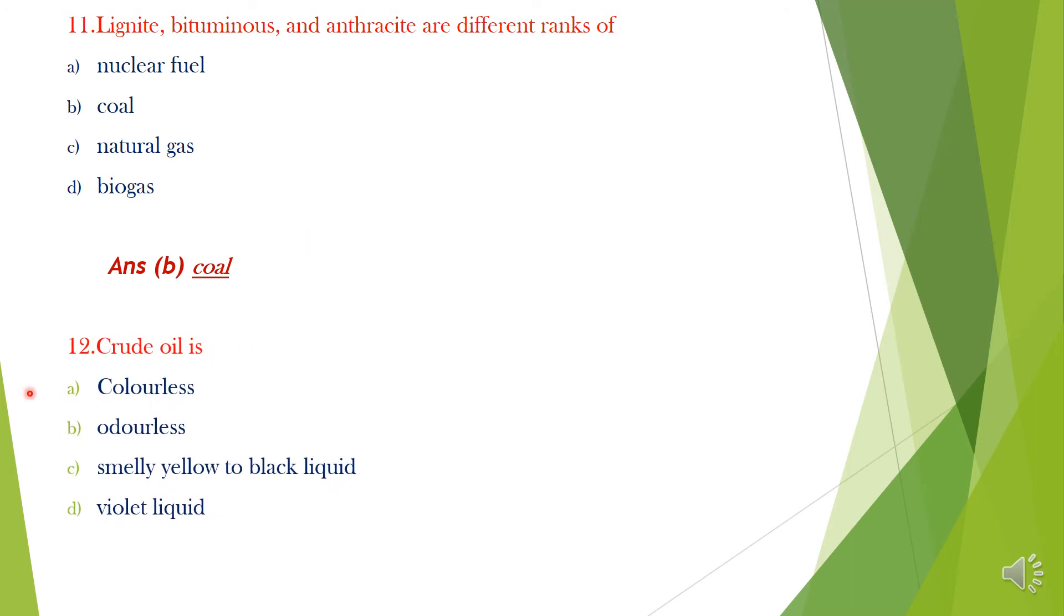Question 12. Crude oil is: A. Colorless, B. Odorless, C. Smelly yellow to black liquid, D. Violet liquid. Answer: Option C, Smelly yellow to black liquid.